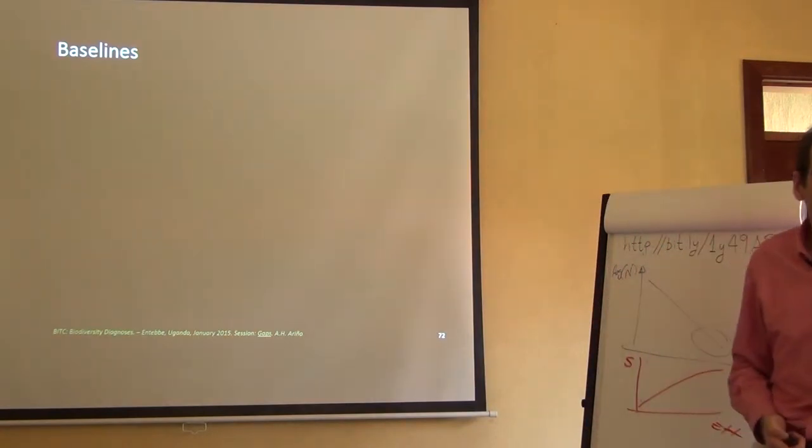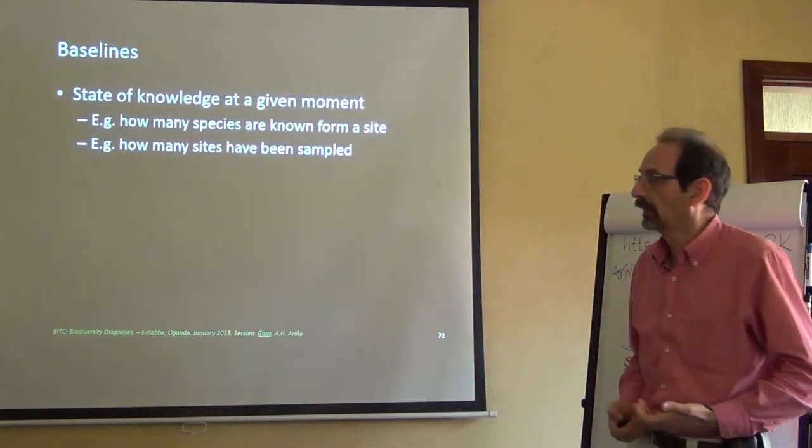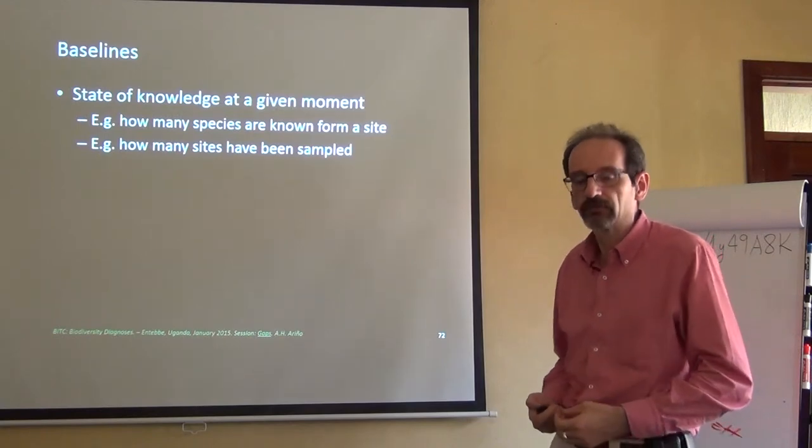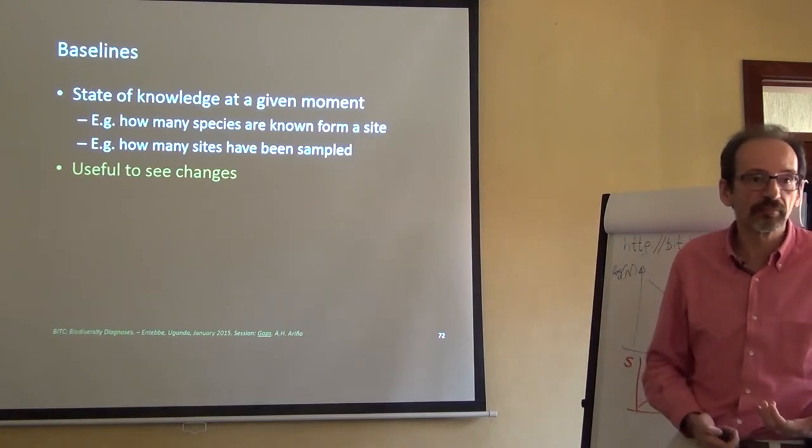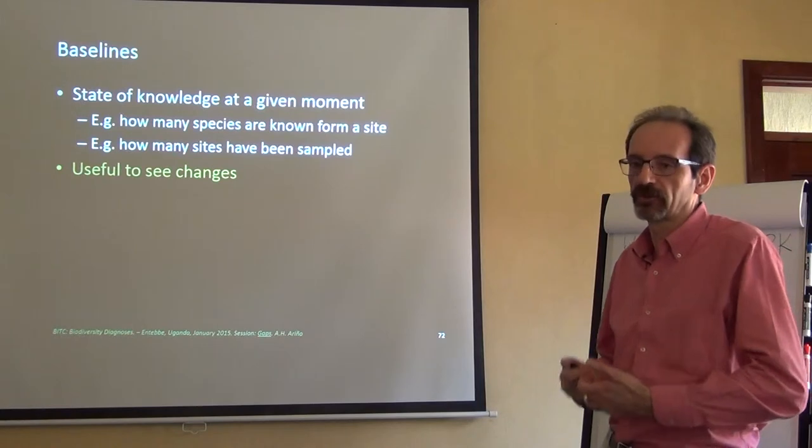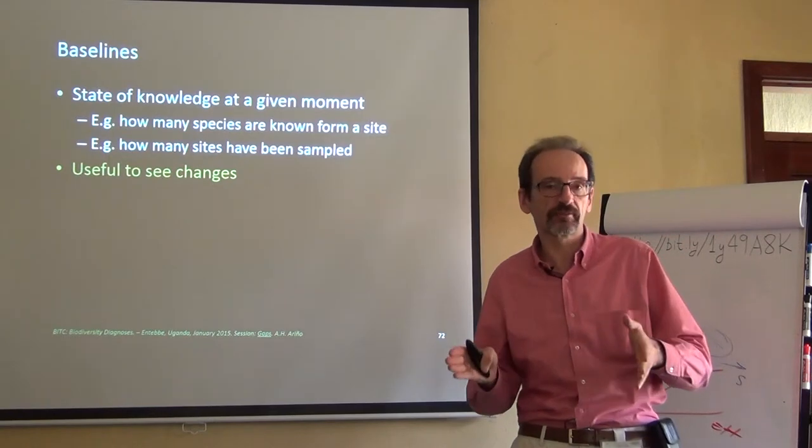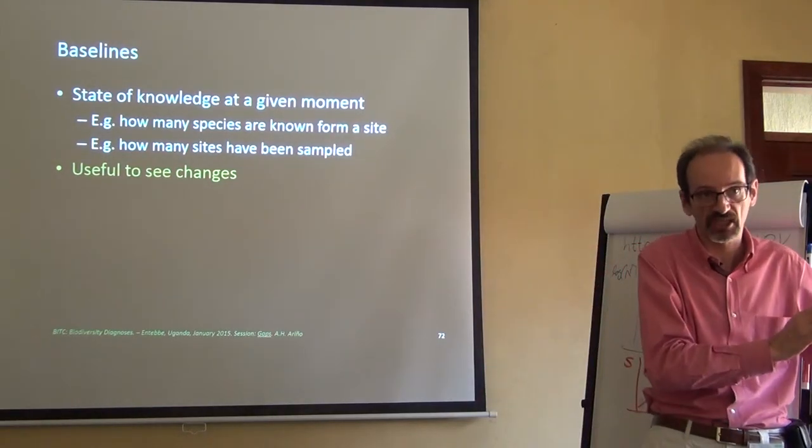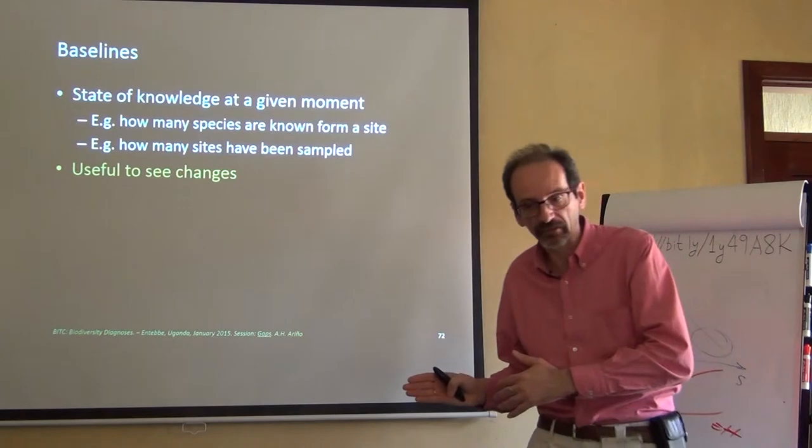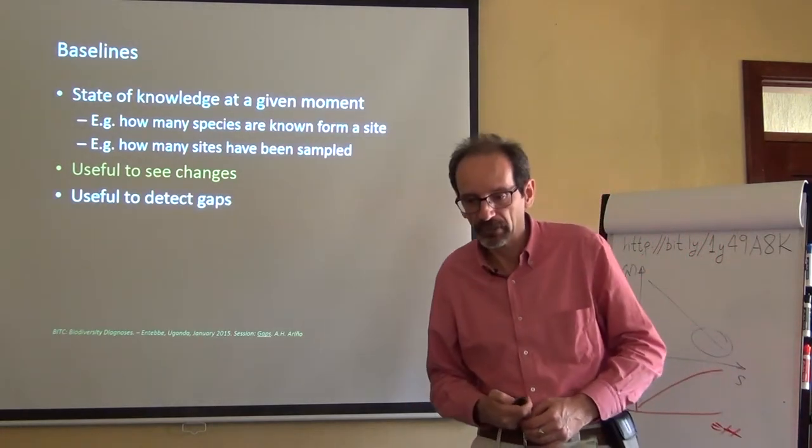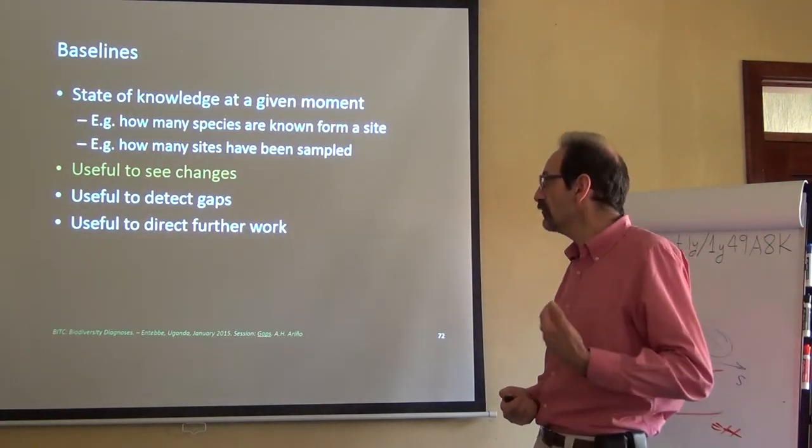One thing that we need quite often and for which we need to analyze gaps often also is baselines. A baseline is the state of knowledge about something - how many species are known from a site, or how many sites have been sampled. It's very useful to have a baseline because you can see changes. We are now so concerned with climate change. Do we have a baseline against which to compare our findings in terms of biodiversity with findings before climate change? For that we need data. If we do have a baseline, we might do the comparisons. If we don't have the baseline, then comparisons might be quite hard to come by. So having a baseline is quite useful to detect additional gaps and to direct further work.